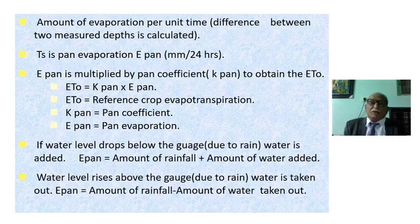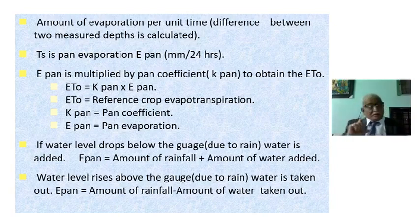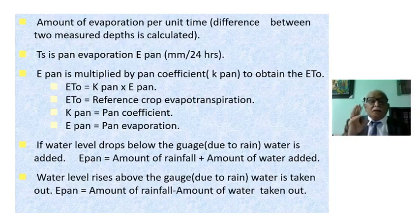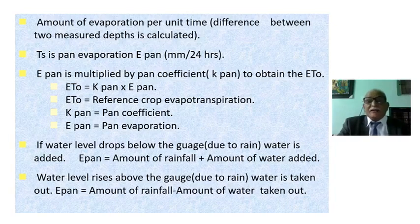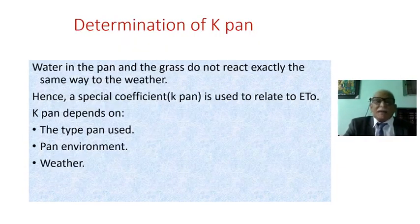We have the amount of evaporation measured as the difference between the measured depths. E-pan is multiplied by the pan coefficient K-pan. Before the evaporation has occurred in a day of 24 hours, we should multiply E-pan with K-pan to get E-tvo — the evapotranspiration from both soil and plant transpiration over 24 hours.